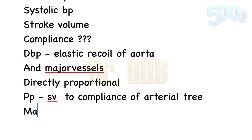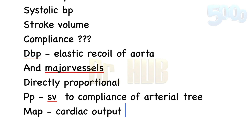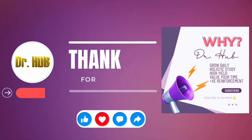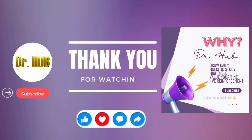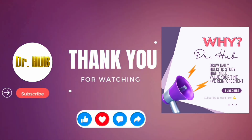Next is MAP, which stands for mean arterial pressure, also called mean blood pressure. It is determined by cardiac output as well as total peripheral resistance. To learn and grow daily like this, please do subscribe.